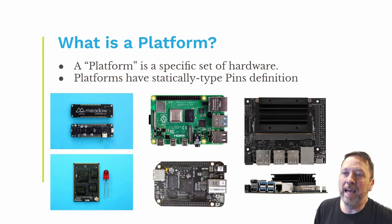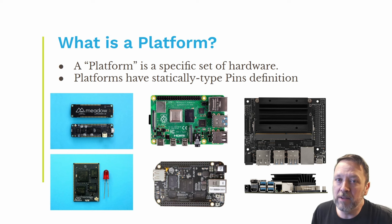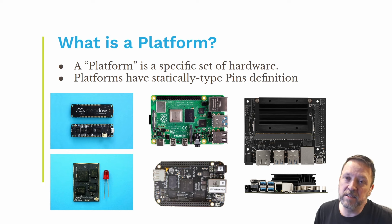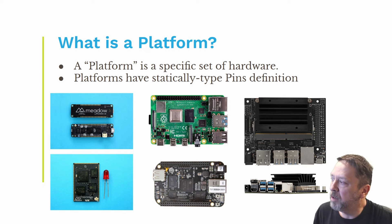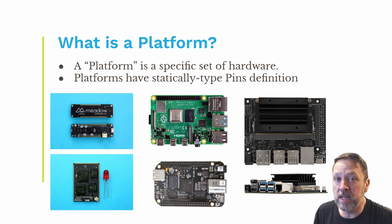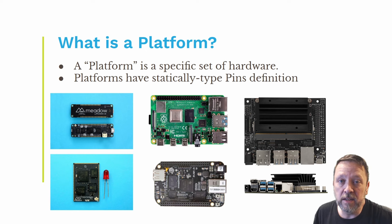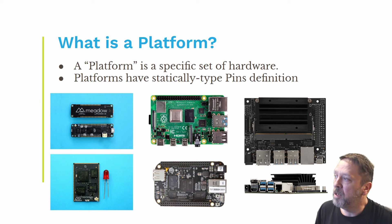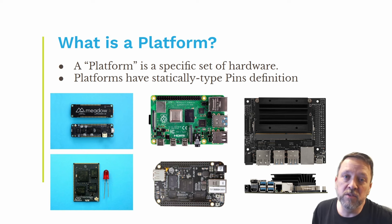So let's talk about what a platform is. When we talk about platform in the context of MeadowCore, we're talking about a specific set of hardware. On the left you see our Meadow Feather F7. Down below that is the MeadowCore compute. We've got Raspberry Pi, the Jetson Nano. All of these are hardware platforms with a distinct set of pins, and those pins have capabilities, but the definition of that platform is what's important.